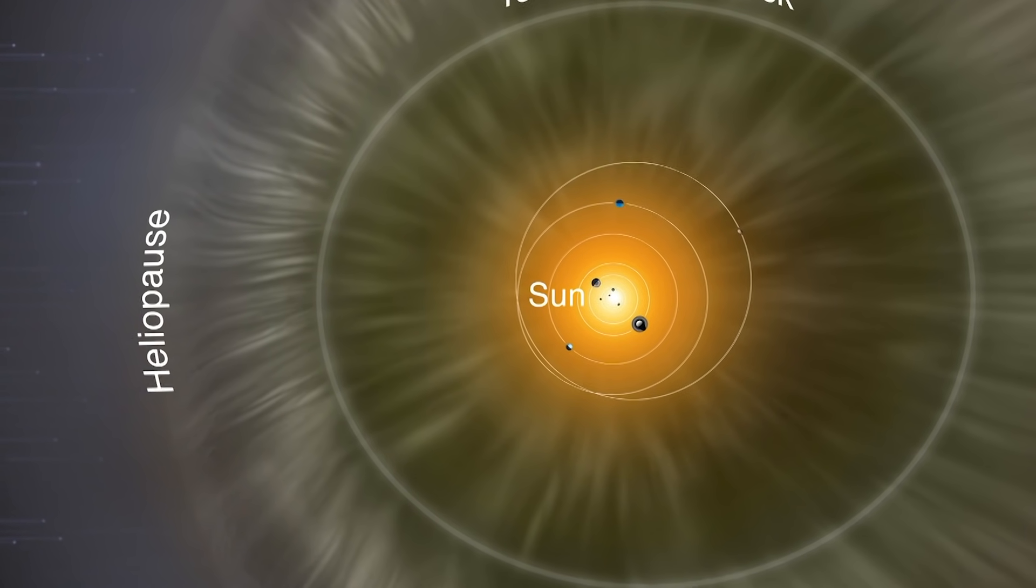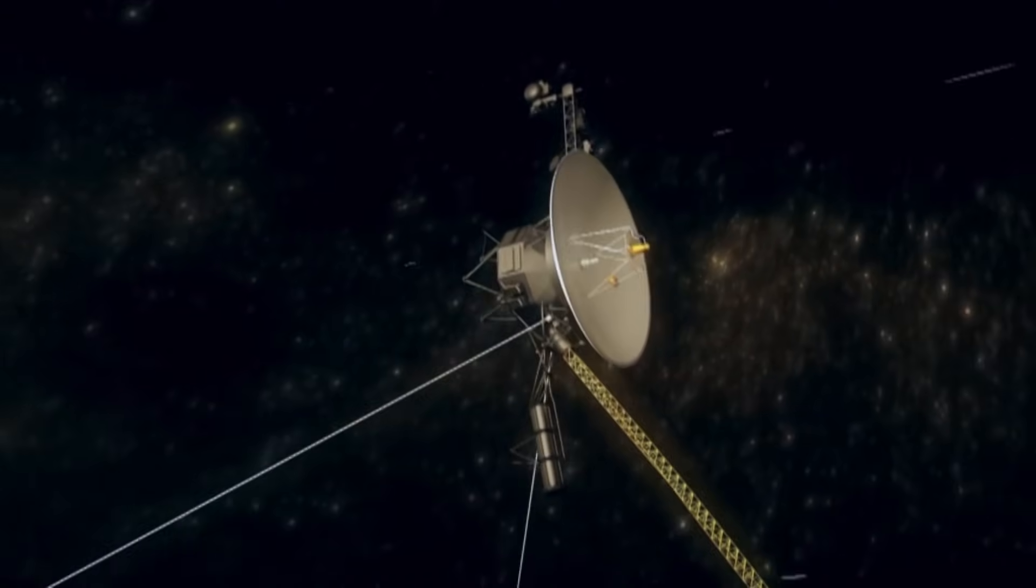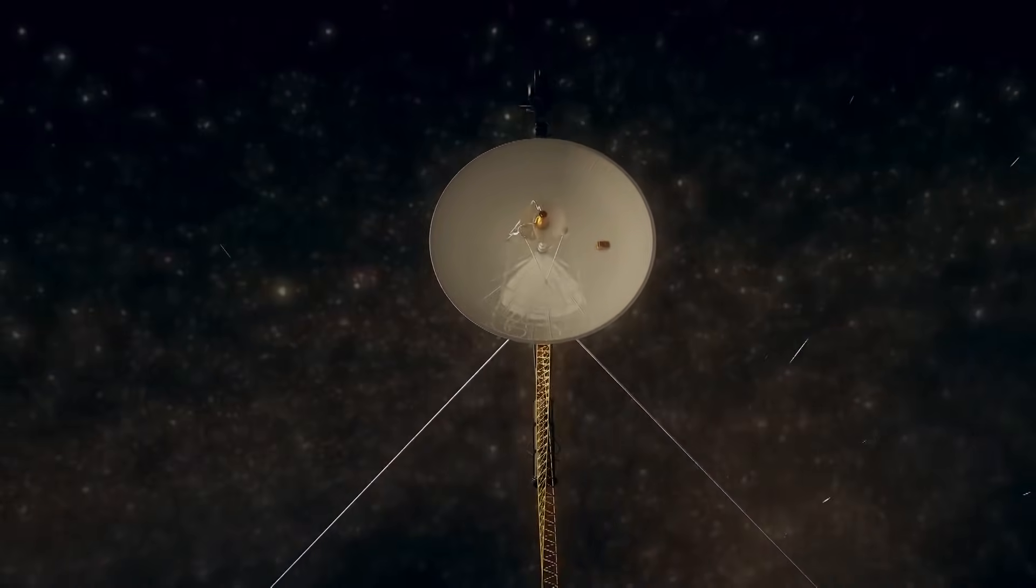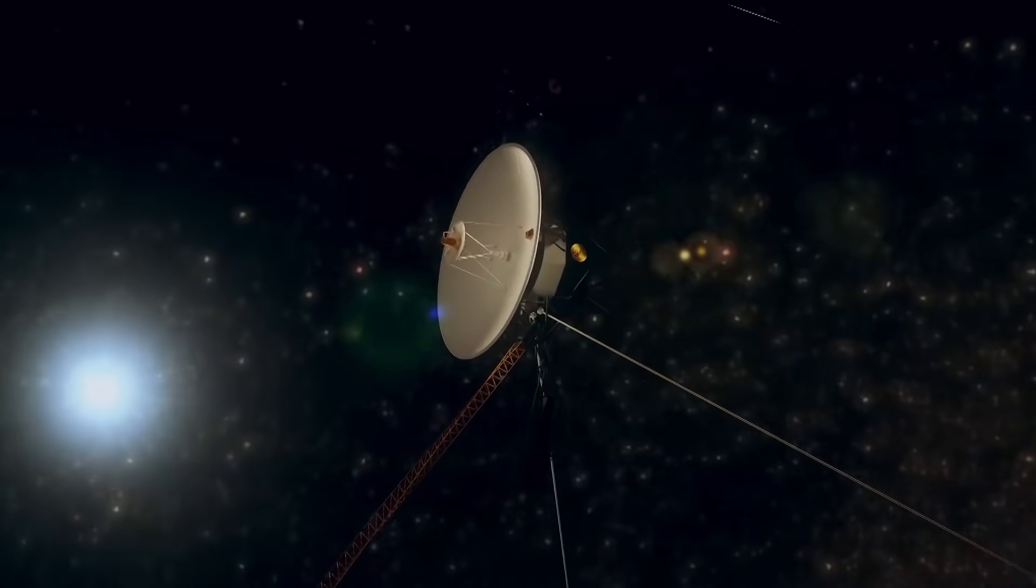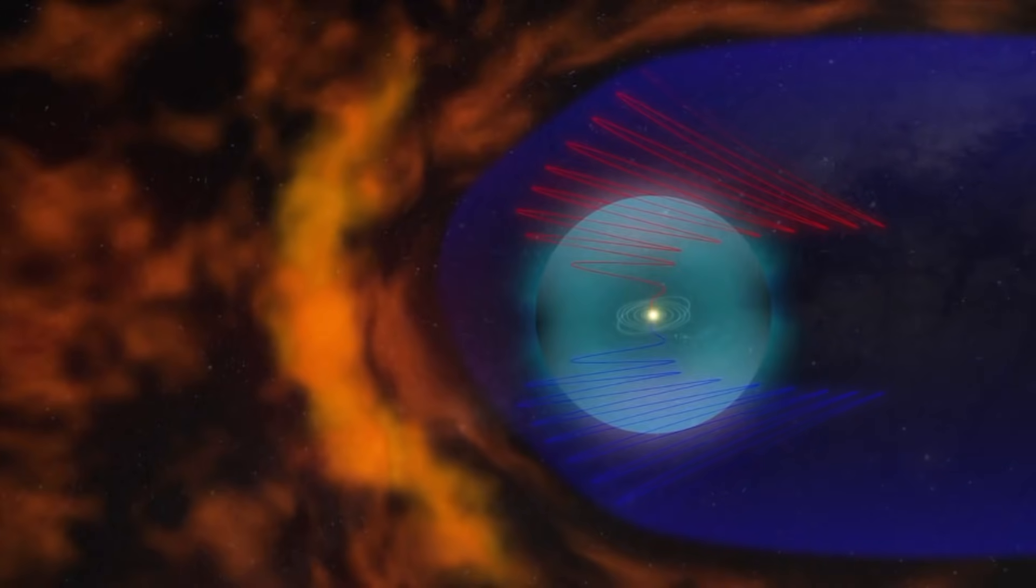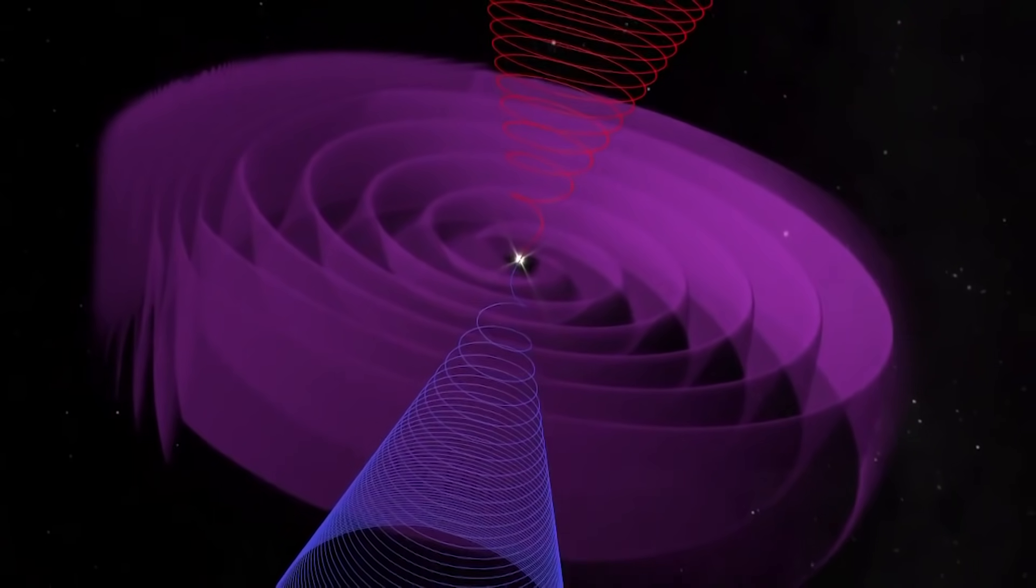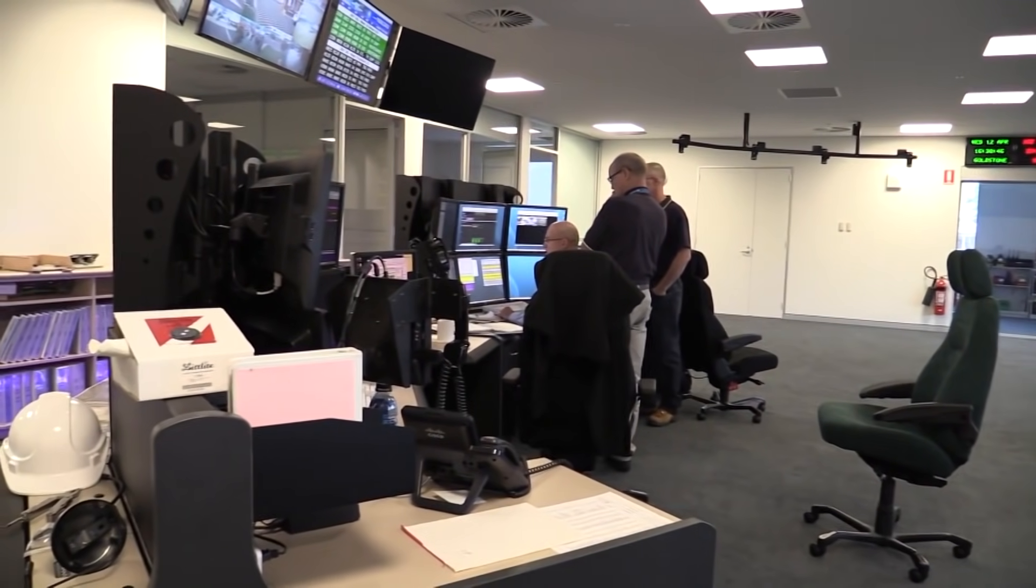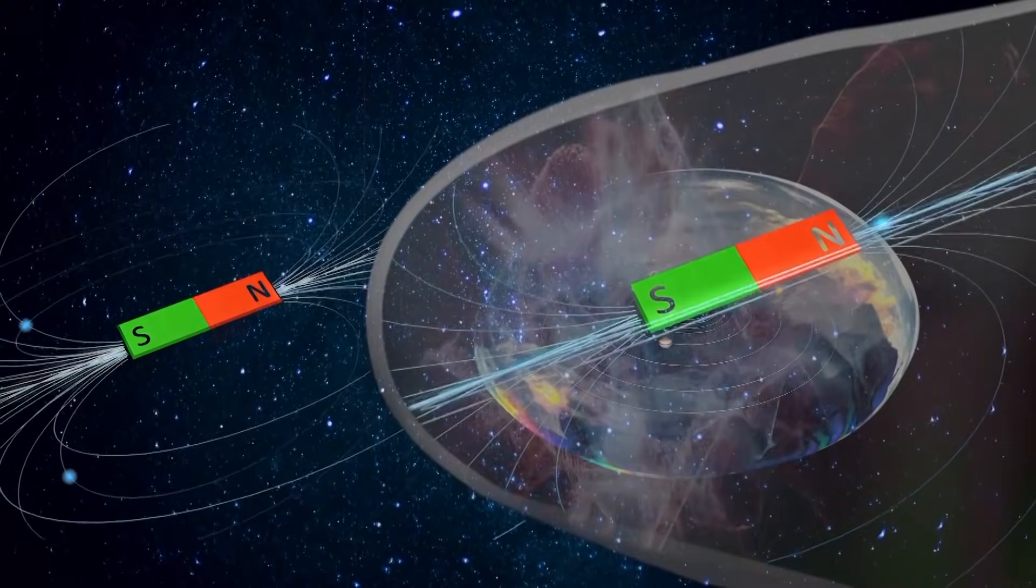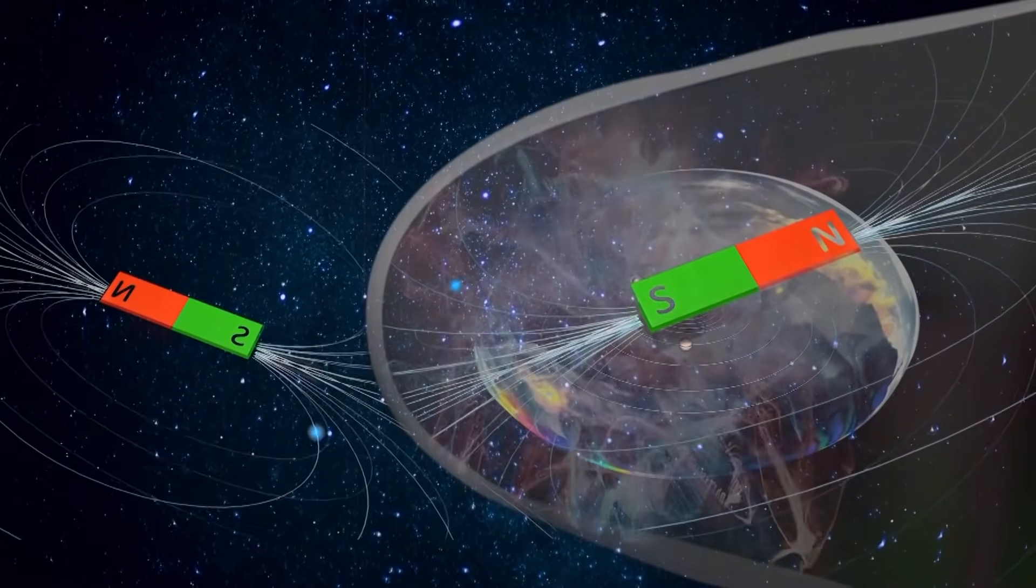The first data on what happens in the heliopause was given to Earth by Voyager 1. It turns out that the direction of magnetic fields inside and outside the heliopause are about the same. Before that, astrophysicists thought that the magnetic field dominating the plasma of interstellar space would move in the other direction or would be chaotic in its movement.